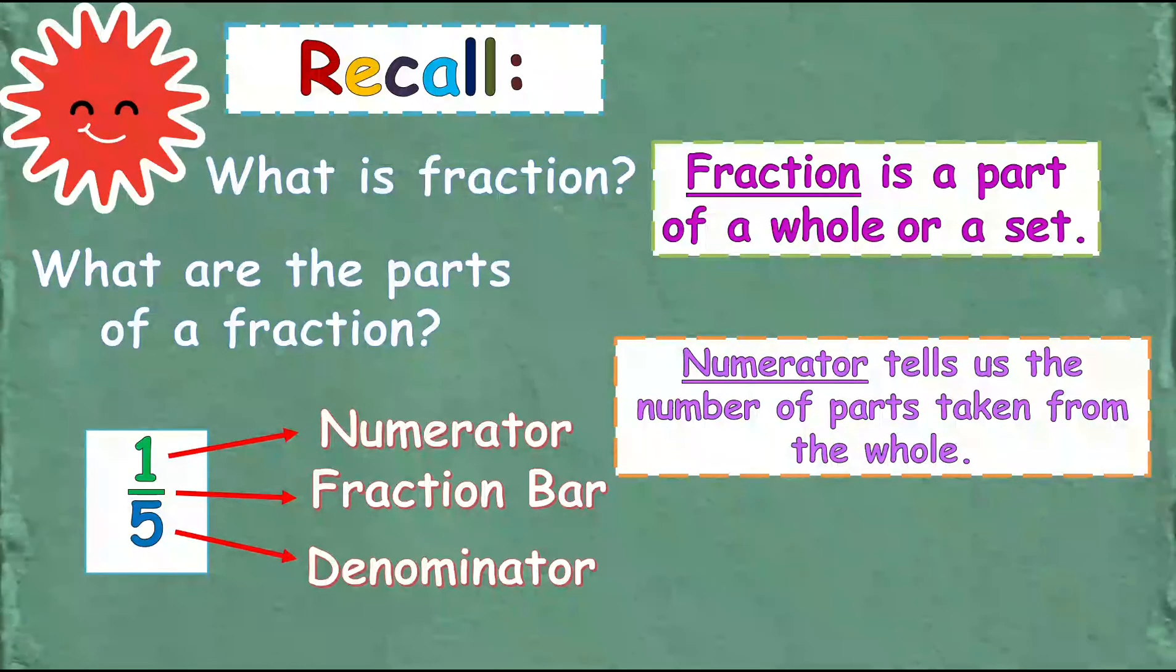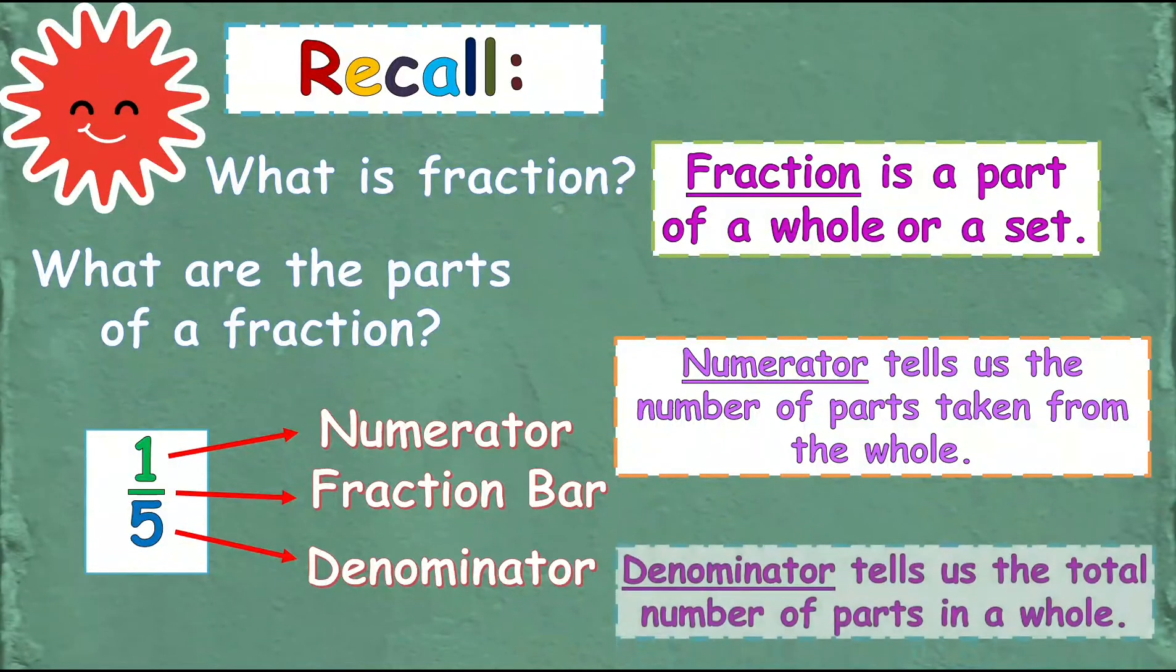Okay, that means it tells us the number of parts taken from the whole or the number of boys from the total number of students, which is 5. And that is the denominator, right? 5. That's the denominator. It tells us the total number of parts in the whole or the number of students.